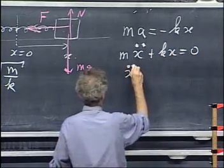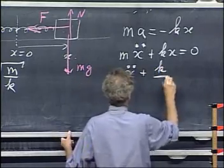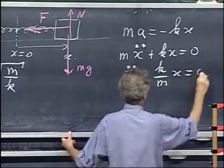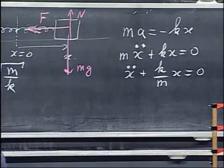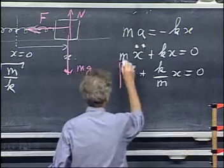Plus kx equals zero. I divide by m, and I get x double dot plus k over m times x equals zero. And this is arguably the most important equation in all of physics.